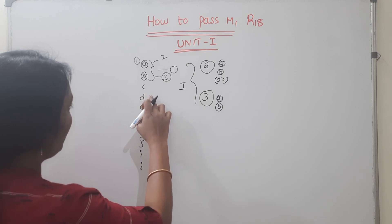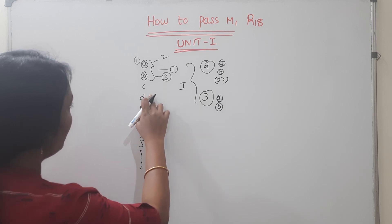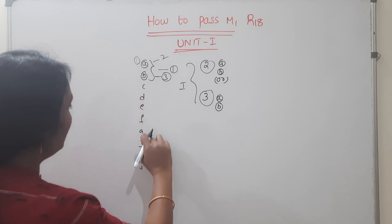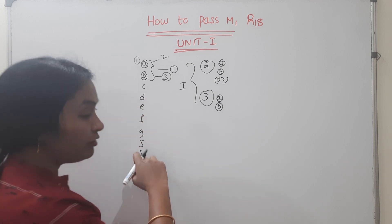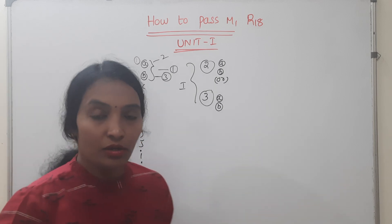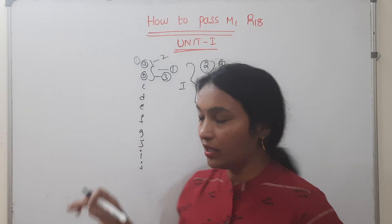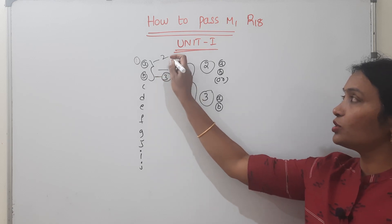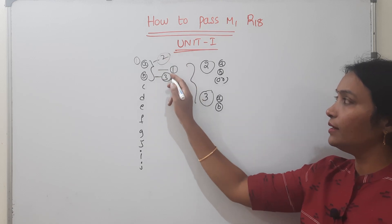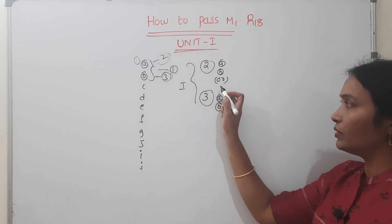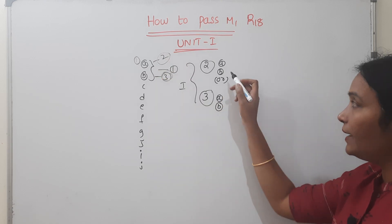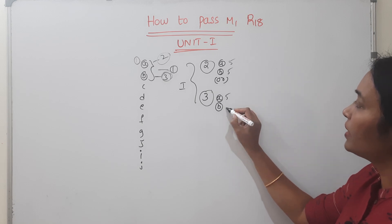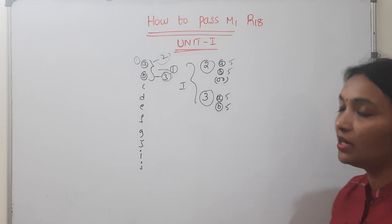Five marks. The total comes to twenty-five marks — ten plus twenty-five marks, so it is short. In Unit-1 we have two marks, one three-mark question, one five-mark question, and another five-mark question.